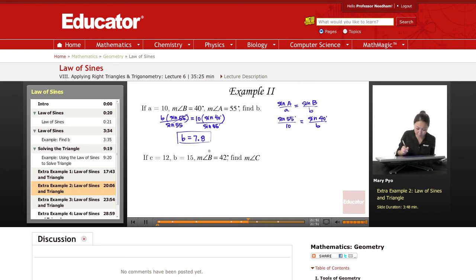Okay, so just make sure you multiply the sine of 40. Punch in sine 40, multiply that by 10, divide it by sine of 55.